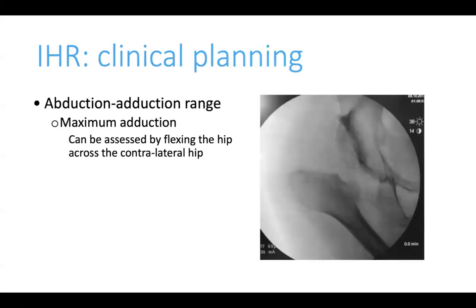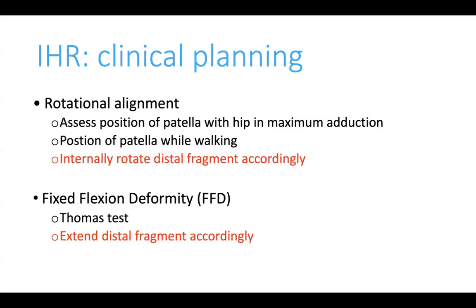Planning consists of a combination of clinical and radiological findings. Clinically, assess the range of maximum adduction by flexing and adducting the hip across the contralateral limb. Rotational alignment is assessed by noting the position of the patella with the hip in maximum adduction — if the patella faces outward, there is an external rotation contracture requiring internal rotation correction at the proximal osteotomy. Also observe the patella while walking. Fixed flexion deformity is assessed with the Thomas test, and if present, extension must be added at the proximal femur osteotomy.